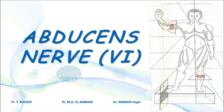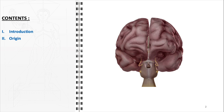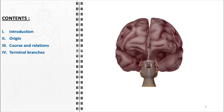In this video, we will explore the intricate anatomy of the abducens nerve, also known as cranial nerve 6. We will begin with an introduction to the abducens nerve, setting the stage for a comprehensive examination of its anatomy and function. The discussion will first detail the origin and course of the nerve, as well as its relationships with adjacent anatomical structures. We will then describe the terminal branches of the abducens nerve as it innervates the lateral rectus muscle and outline its various connections.